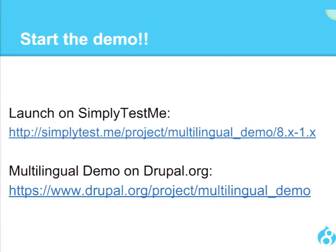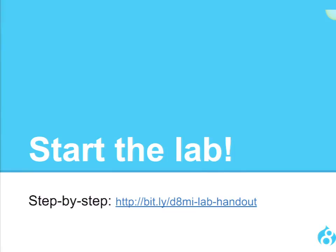We also have a demo of a multilingual site built with Drupal 8 core. This demo project is on drupal.org. If you've never used simplytest.me before, it's amazing — you can give a URL to clients or coworkers and simplytest.me will build a site based on that URL. The URL is simplytest.me/project/multilingual_demo/8.x-1.x and that will start the end result of the demo for you very quickly.